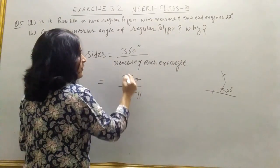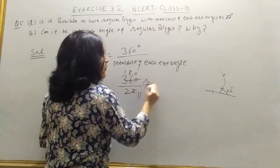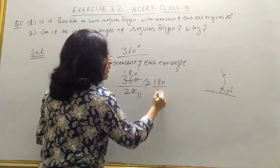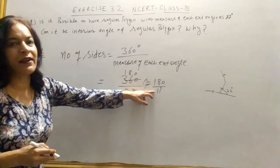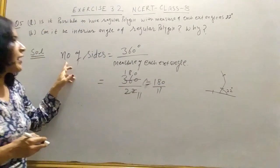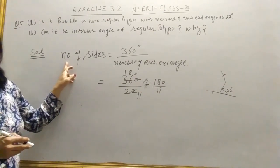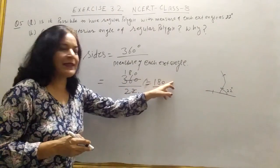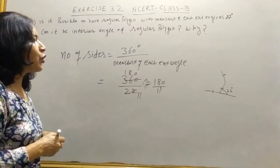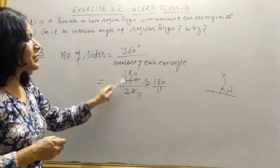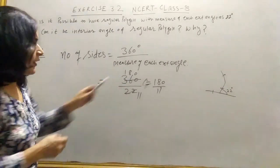we get 180 upon 11. Students, if we divide it further, we will get the answer in decimal points. And here we need the number of sides. So the number of sides cannot be in decimal points. So no, it is not possible because 22 is not a factor of 360 degrees.